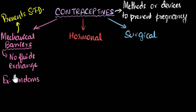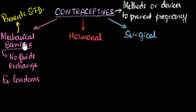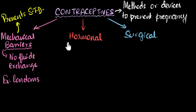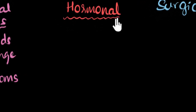One thing I need to be very clear: when I say 'prevent STD' or 'prevent pregnancy,' I don't mean 100%. These contraceptives are never 100%. They decrease the chances of pregnancy and decrease the chances of catching an STD. With that in mind, let's move on to the next method — the hormonal method.